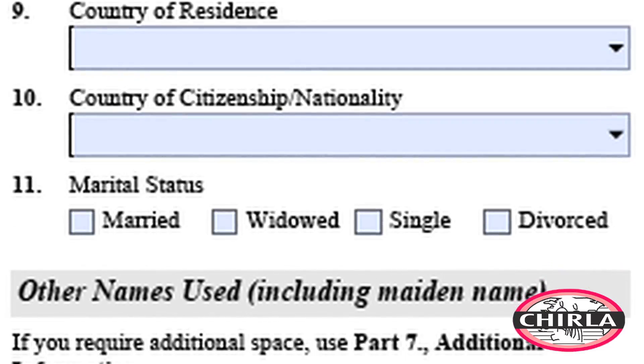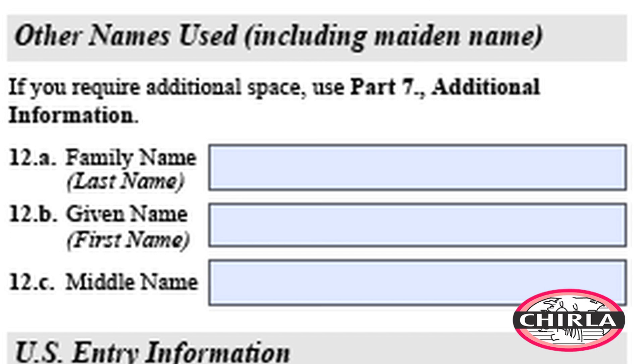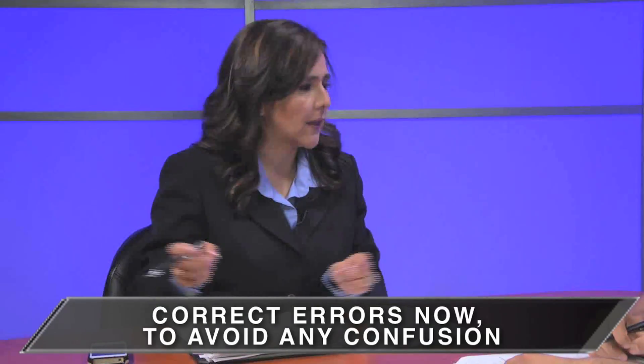Question 12: many students accidentally had a different name written in school records, or others have used different names. Is it required to provide those additional names? First and foremost, if we have records where we know the institution made a mistake, the best thing to do is go back to your school and have them fix that record — it probably takes at most two weeks. We don't want to confuse the immigration officer reviewing your package; we want to make it as easy as possible for them.